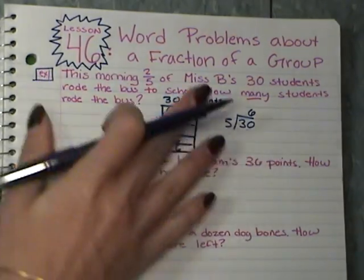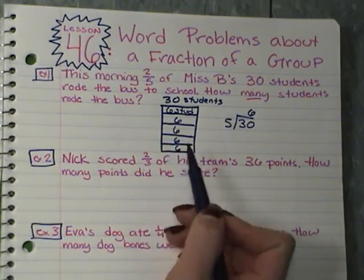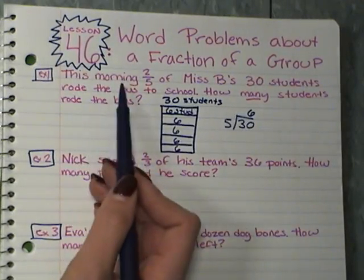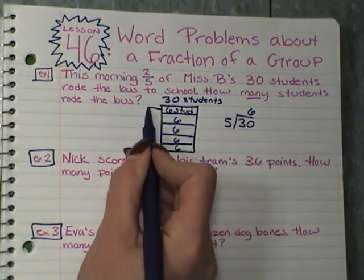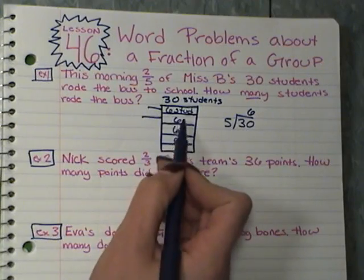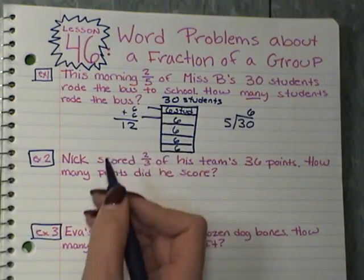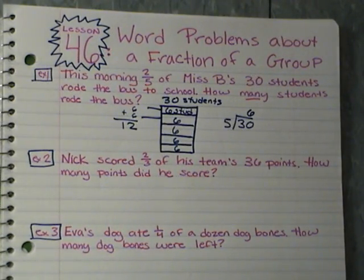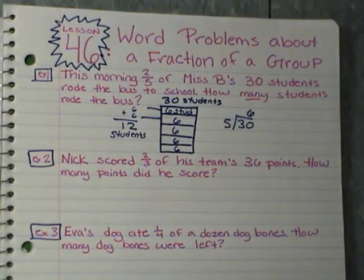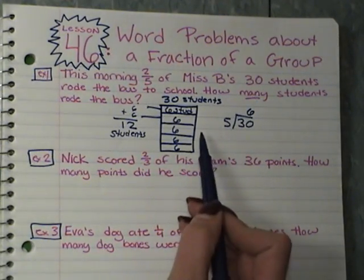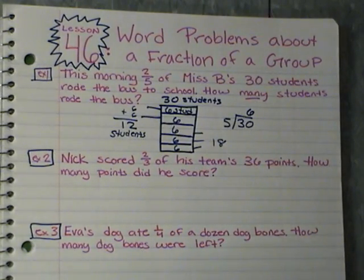Each section has six students — six, six, six, six, and six. Six times five is 30, so this represents all of my students. The question says two-fifths of the 30 students rode the bus. So I'm going to take two of my sections: six plus six equals 12. My answer is 12 students rode the bus. If it asked how many did not ride the bus, I could take six plus six plus six to get 18.